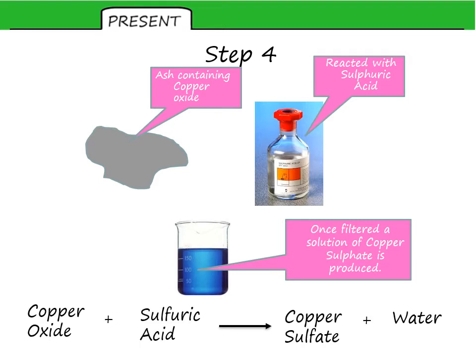And that produced the copper sulfate and water. What we would have done is we would have filtered the copper sulfate solution to get rid of the excess copper oxide. And once we had this clear blue solution, we heated it up using an evaporating basin and probably left it on the side for a couple of days to produce copper sulfate crystals.